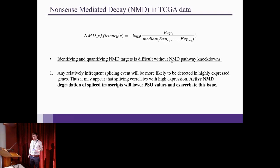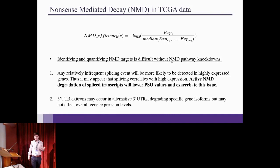But it's kind of really difficult to identify and quantify NMD targets without NMD pathway knockdowns. So there's a few reasons. One of them is that relatively infrequent splicing events will be more likely to be detected in highly expressed genes. And this is the problem that actually a lot of us have been dealing with. It's a problem in bulk RNA sequencing. It's a problem in single-cell RNA sequencing. It's basically a problem everywhere. But it's particularly a problem here because active NMD degradation of spliced transcripts will lower PSO values. And so this exacerbates the issue. So we expect that lower expressed genes will be the ones we're looking for for the splicing.